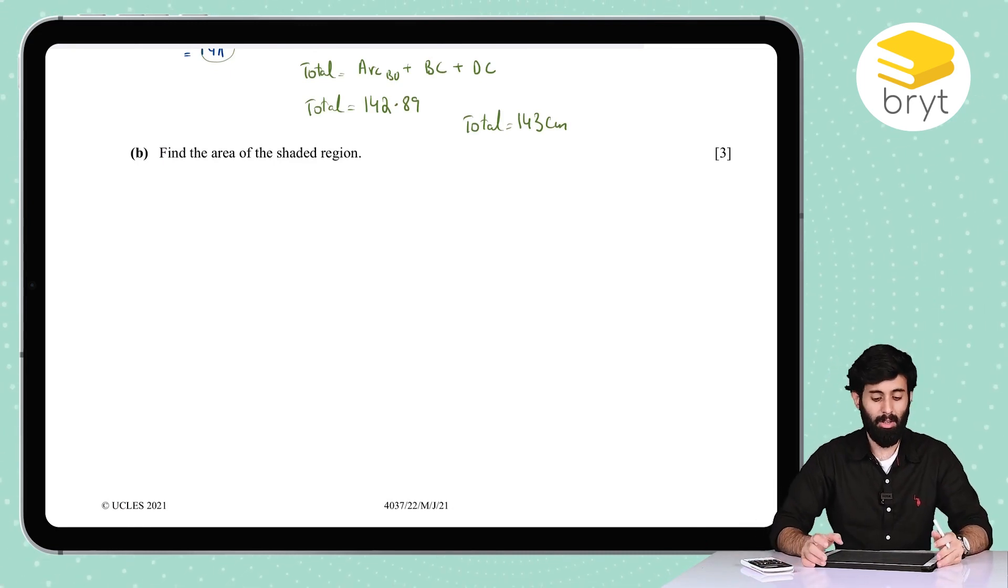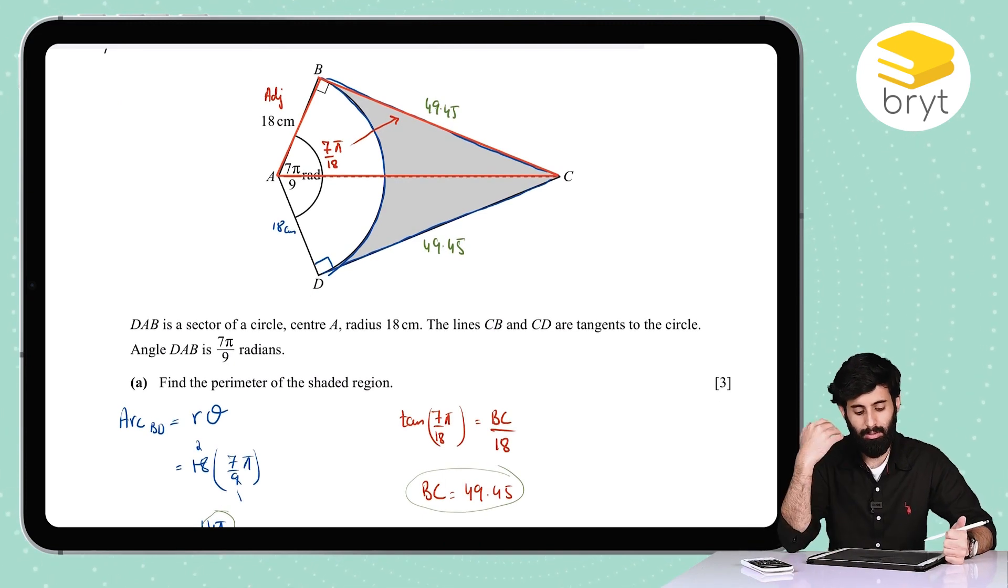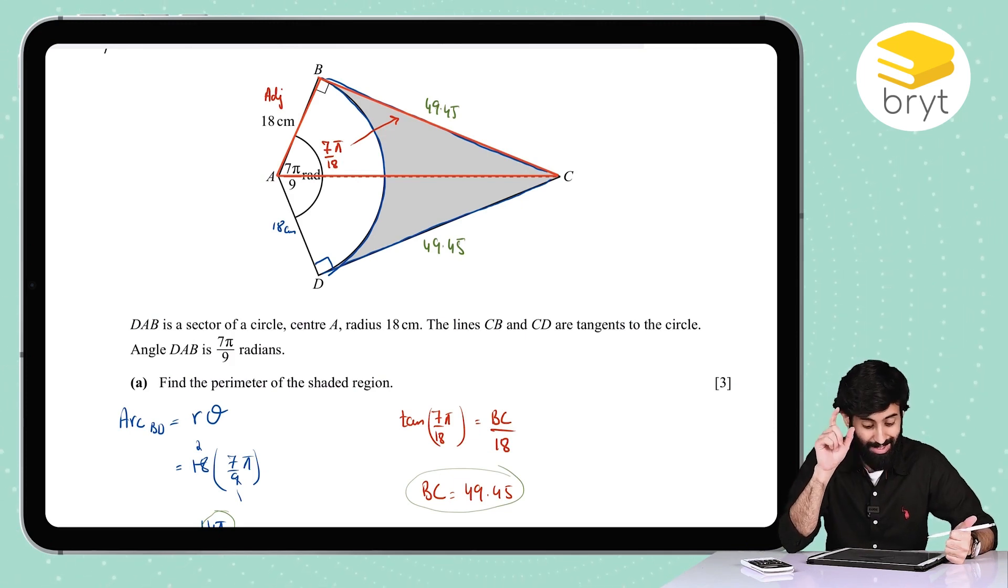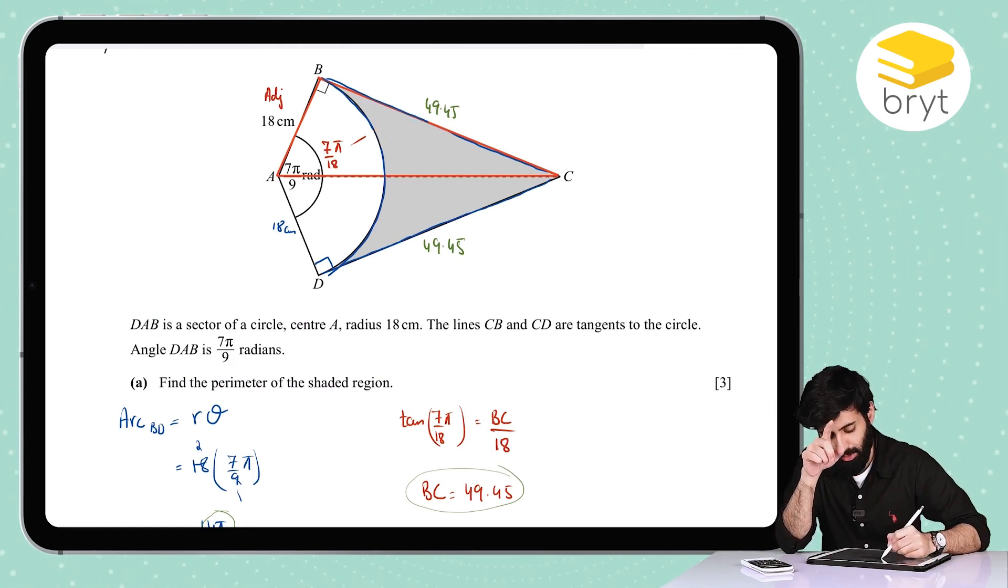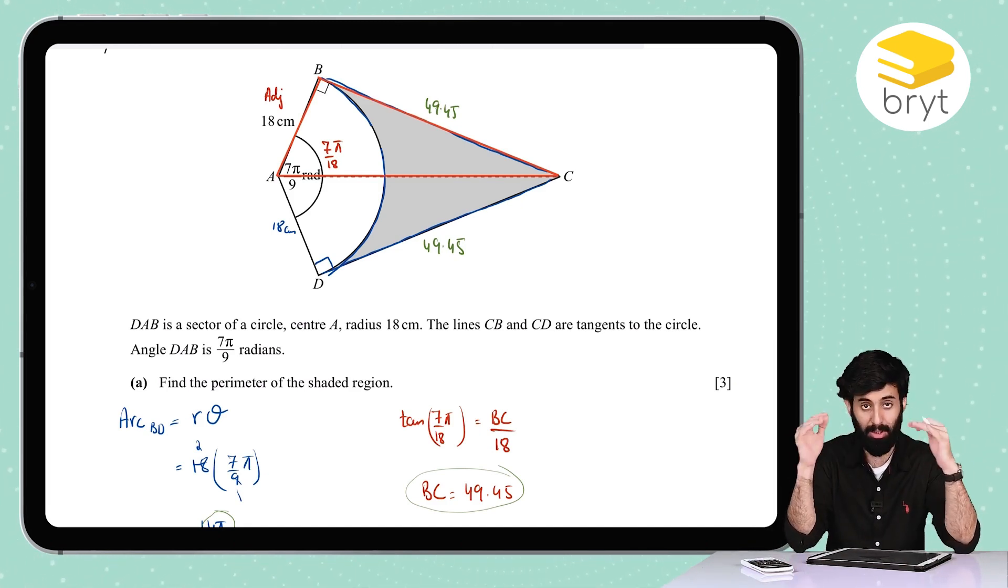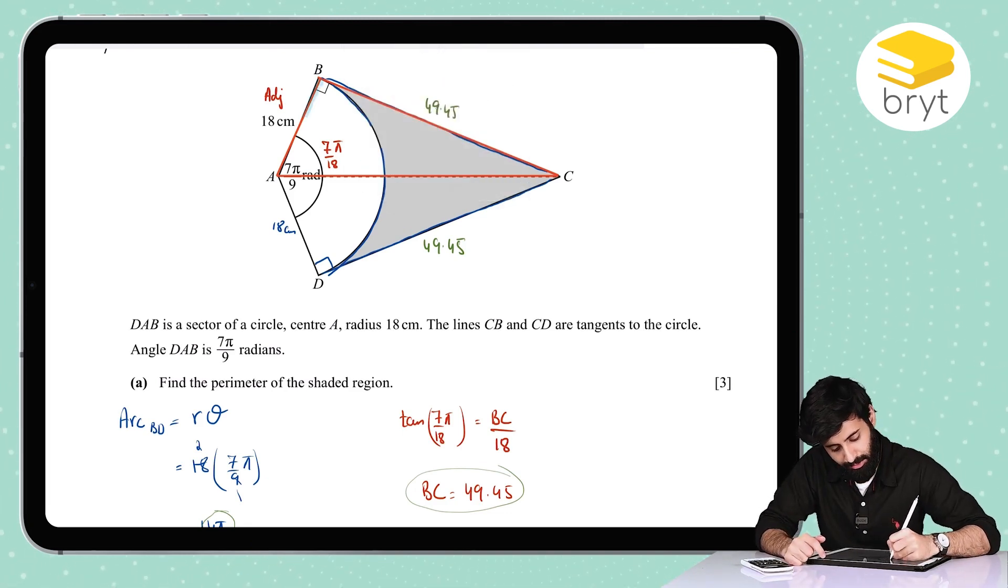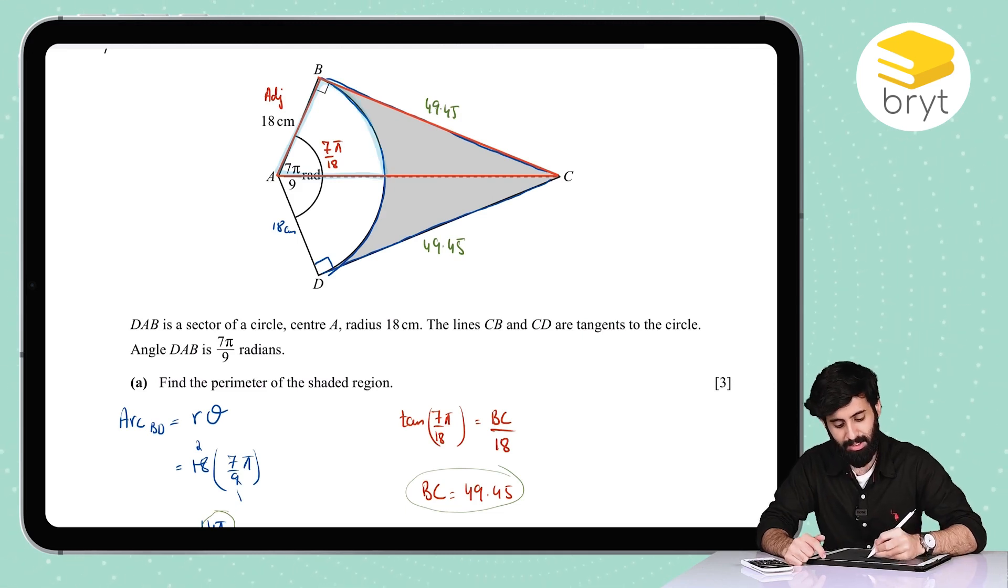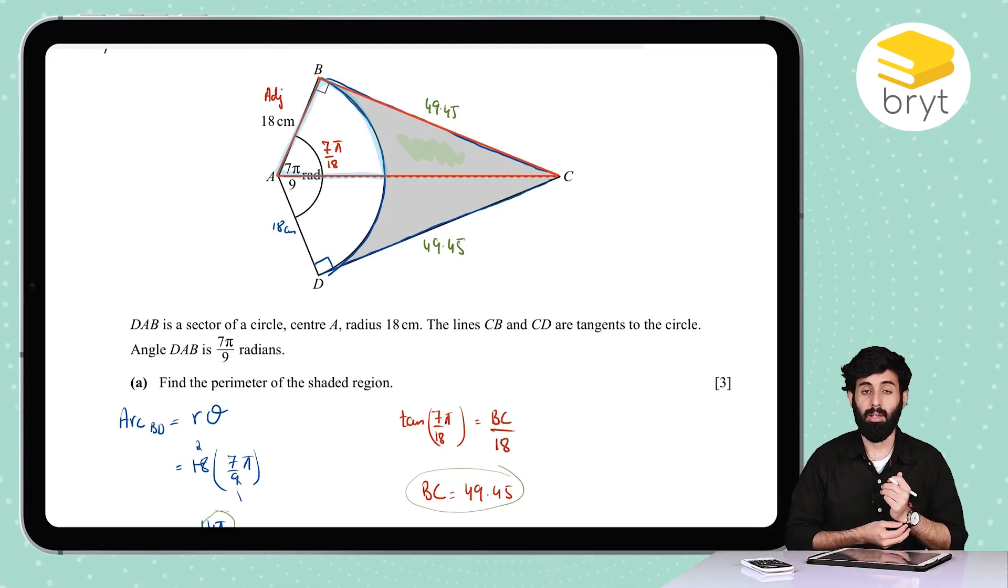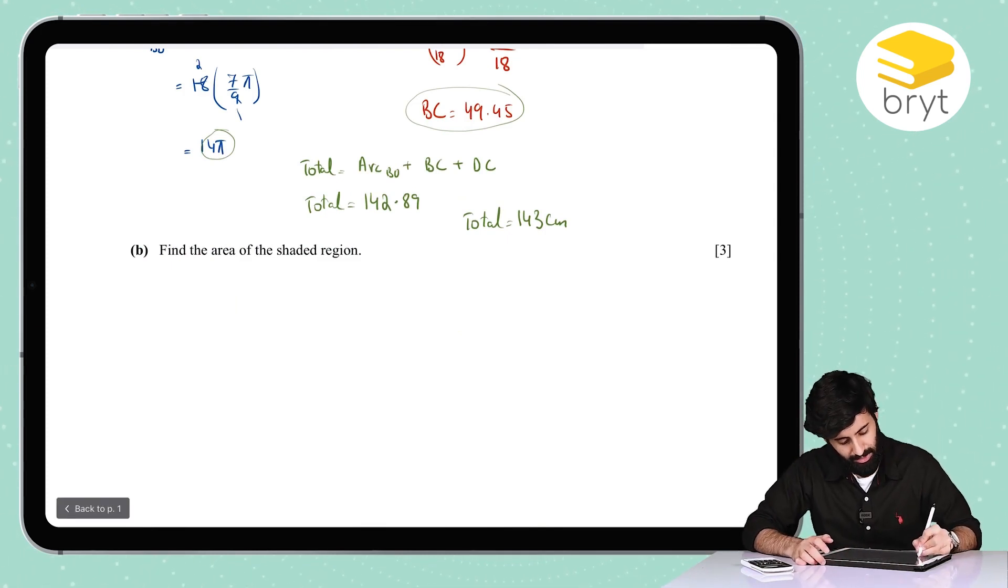Then it says find the area of the shaded region, very predictable. So area of the shaded region theoretically can be worked out by first finding out the area of the triangle, that's the larger shape, and then from it subtracting the area of the sector, and then multiplying by two. What I mean by that is that first we'll find out the area of the shape that I've drawn in red, the triangle, and then from it we'll have to subtract the area of the shape which I'm now highlighting in blue. That's just going to give me one half of the area of the shaded region. So if I want the entire thing, I'm going to have to multiply it by two.